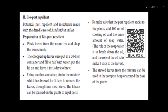After 3 days, the mixture should be filtered to remove the leaves. The filtrate can be sprayed on the plants to control pests. To stick the pesticide onto the plants, we have to add 100 ml of cooking oil and the same amount of soap water. Soap water is used to break down the oil.